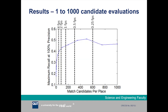This graph shows the maximum recall achieved at 100% precision using various numbers of candidate evaluations. The number of candidates evaluated from one to a thousand is shown along the x-axis, with the achievable frame rate labeled on the graph — on a 2011-era dual-core laptop. We're able to evaluate about 150 place match candidates at real-time speed on a car driving at about 60km per hour.